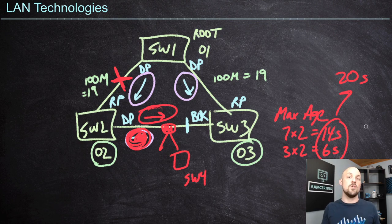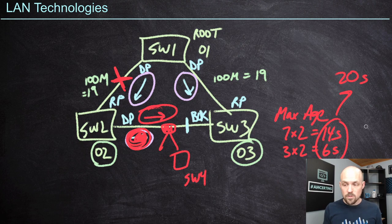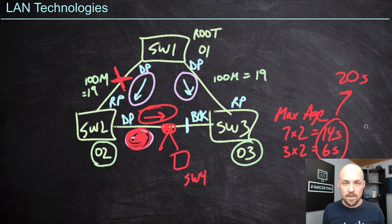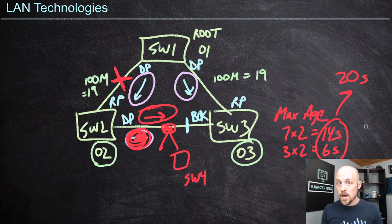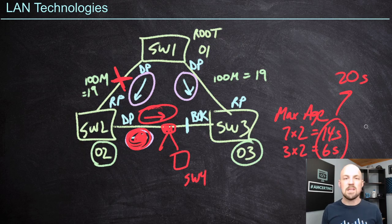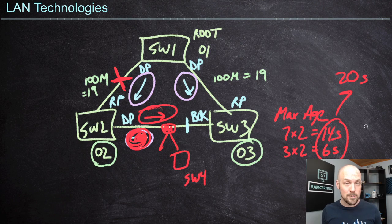If our network has a smaller diameter — like three switches — we could tune max age down to 12 seconds (3 × 2 + 3 × 2 = 12). But we need to be very intentional with spanning tree timers. If you just set max age to 10 seconds thinking it'll speed up convergence, there's a scenario involving dropped BPDUs that could cause major havoc. It's not likely, but it's possible. Be very careful about cranking timers down.